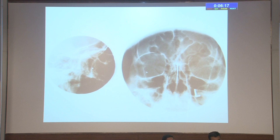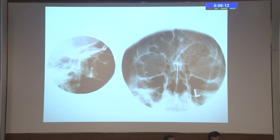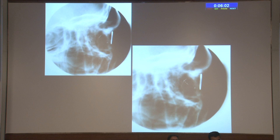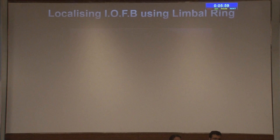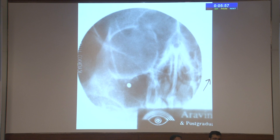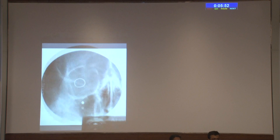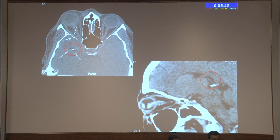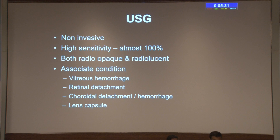Ultrasound is valuable for assessing collateral damage such as vitreous hemorrhage, retinal tears, retinal detachment, choroidal detachment, and lens capsule status — but it must be performed gently without pressing on the globe to avoid extrusion of intraocular contents. CT scan is very useful for localizing even very small foreign bodies. When ordering MRI, be careful to first rule out a metallic foreign body, as the magnetic field can move it inside the eye and cause collateral damage. ERG is useful for chronic foreign bodies; if both ERG and EOG are flat, foreign body retrieval offers no functional benefit.